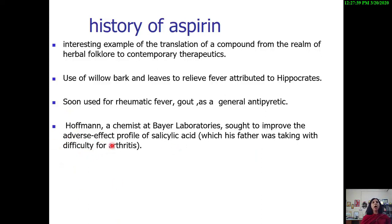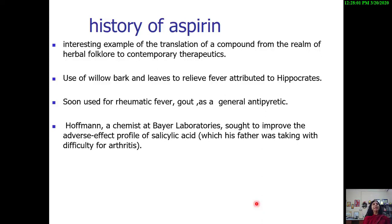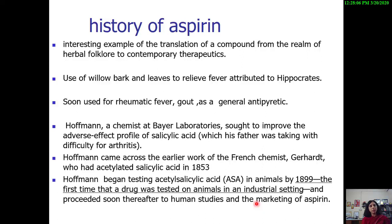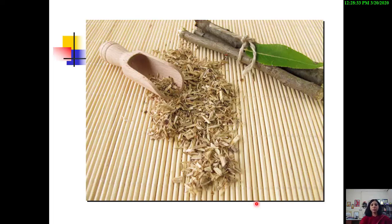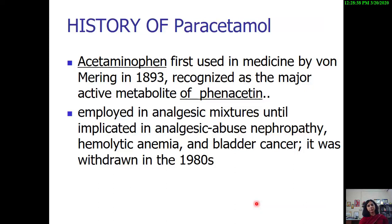Hoffman is credited for making aspirin in a more tolerable form. He loved his father, who was having great difficulty because of arthritic inflammation and pain. As a chemist at the Bayer laboratory, he sought to improve the adverse effect profile of salicylic acid. Hoffman came across the earlier work of the French chemist Gerhardt, who had acetylated salicylic acid in 1853. Hoffman then began testing acetylsalicylic acid in animals in 1899 — the first time a drug was tested on animals in an industrial setting — and proceeded to human studies and marketing of aspirin.